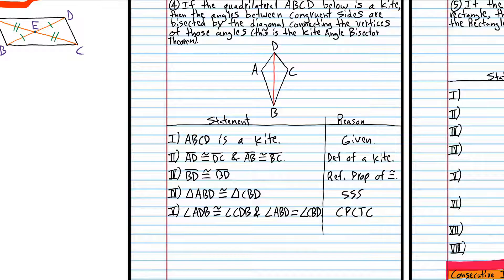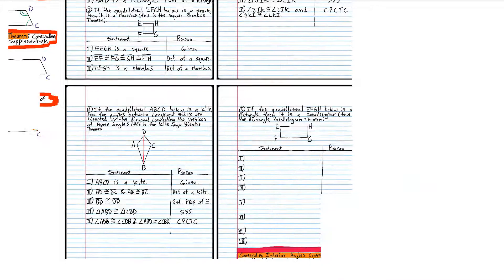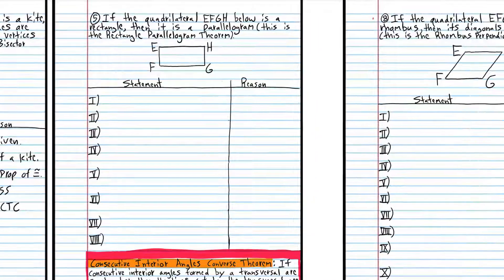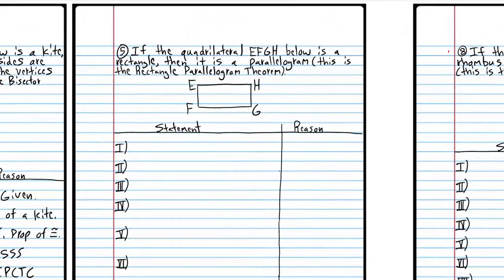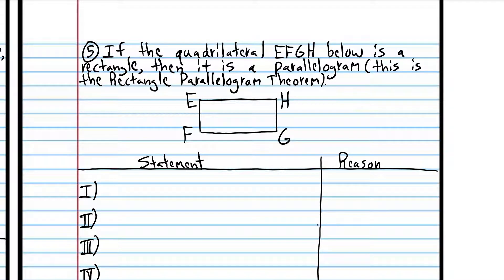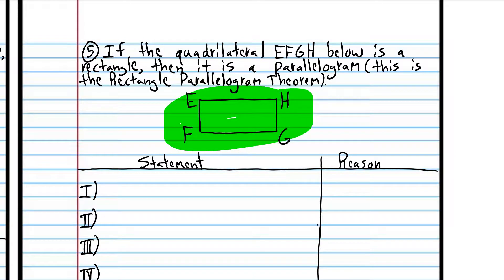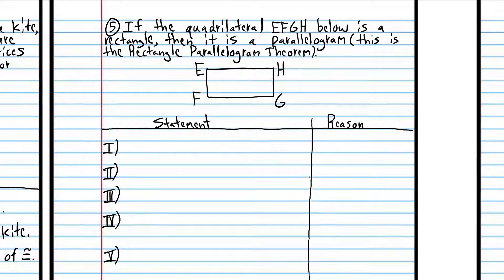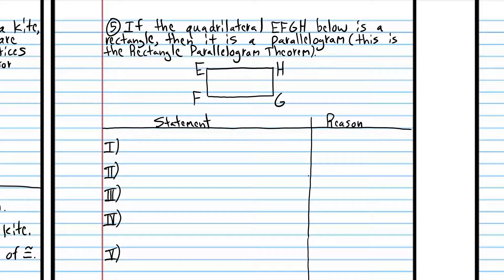On to number five: if the quadrilateral EFGH below is a rectangle, then it's a parallelogram. So if we know this quadrilateral is a rectangle, we're going to prove it has to be a parallelogram. This proof is going to be a little weird, but the concept is simple.